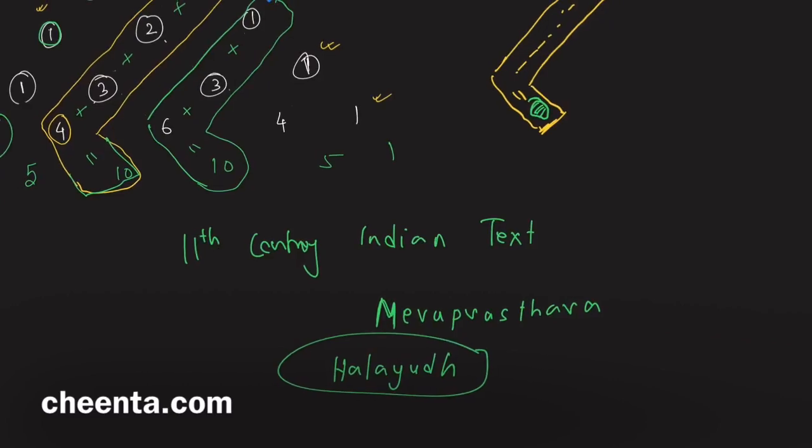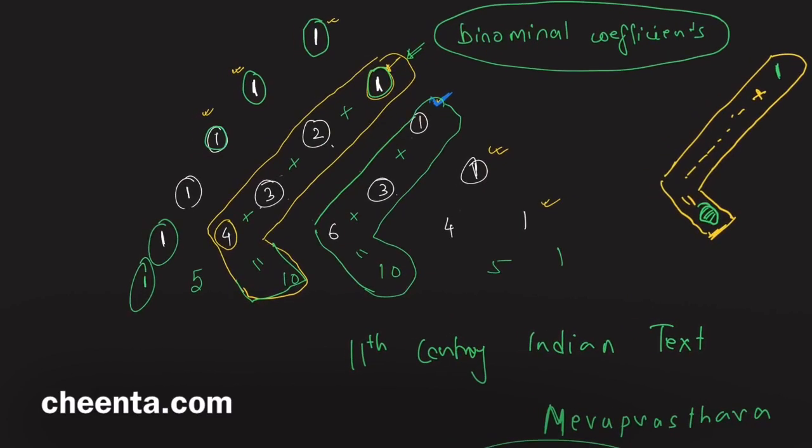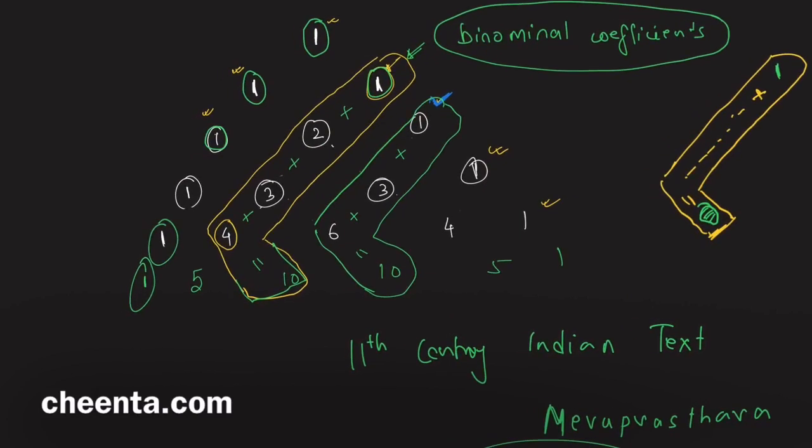After 300 or 400 years, Pascal actually talked about it one more time. This hockey stick identity was also discovered by a Chinese mathematician.